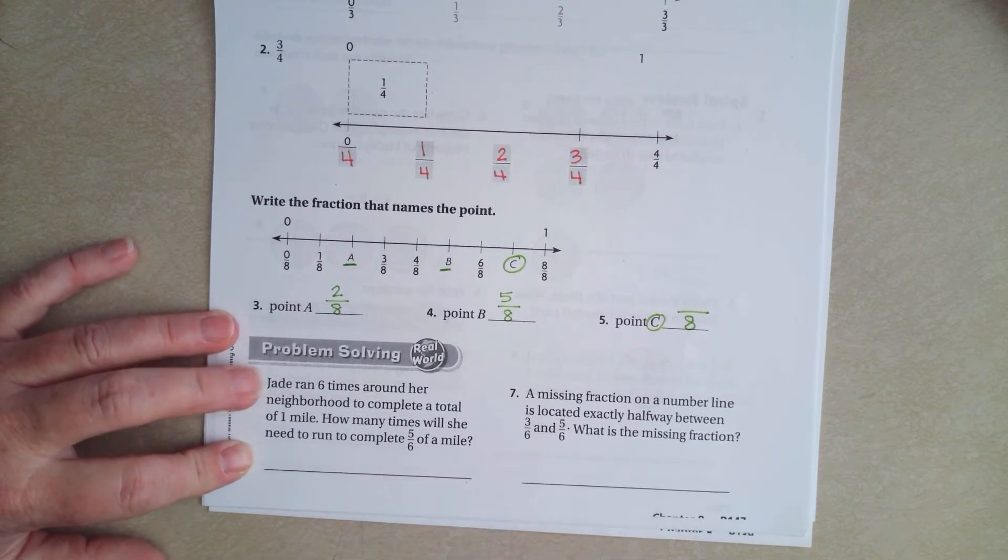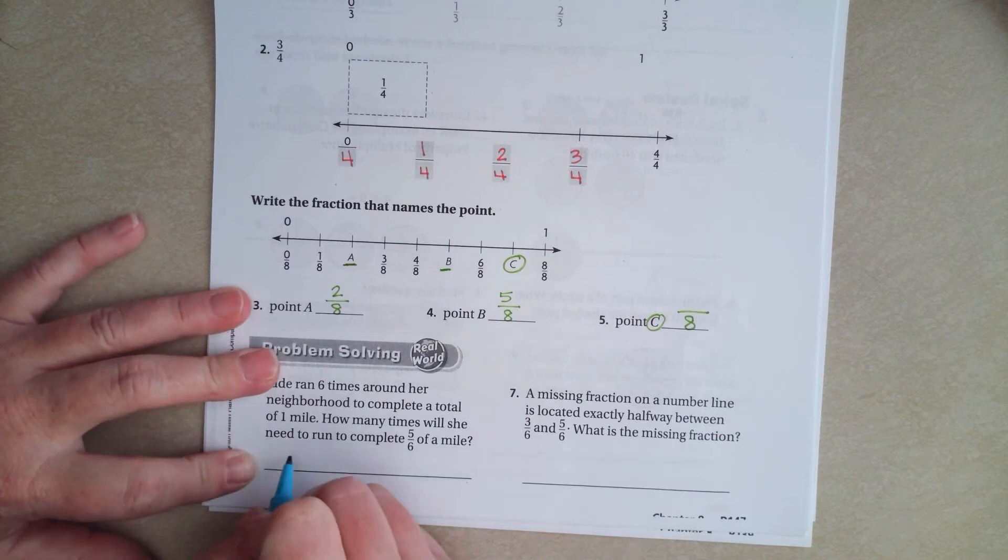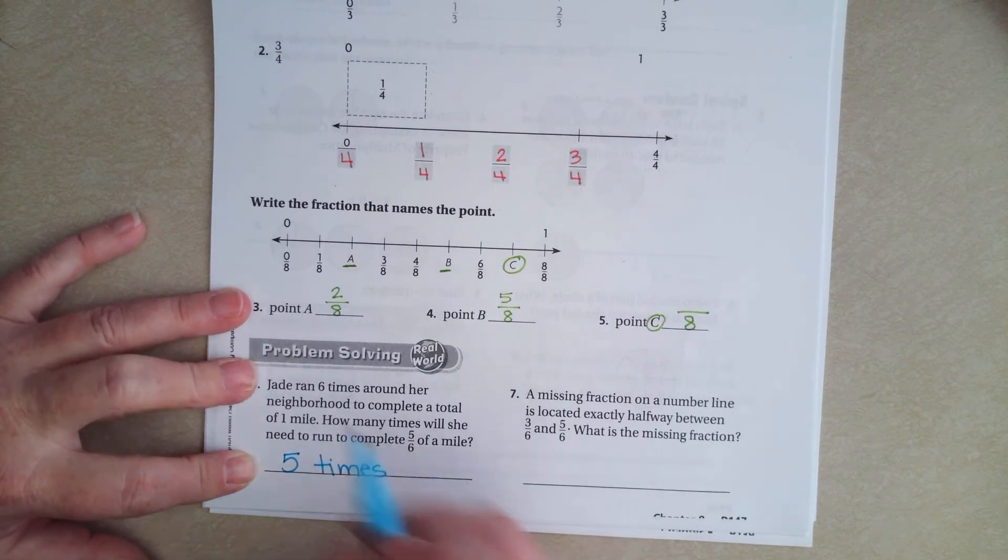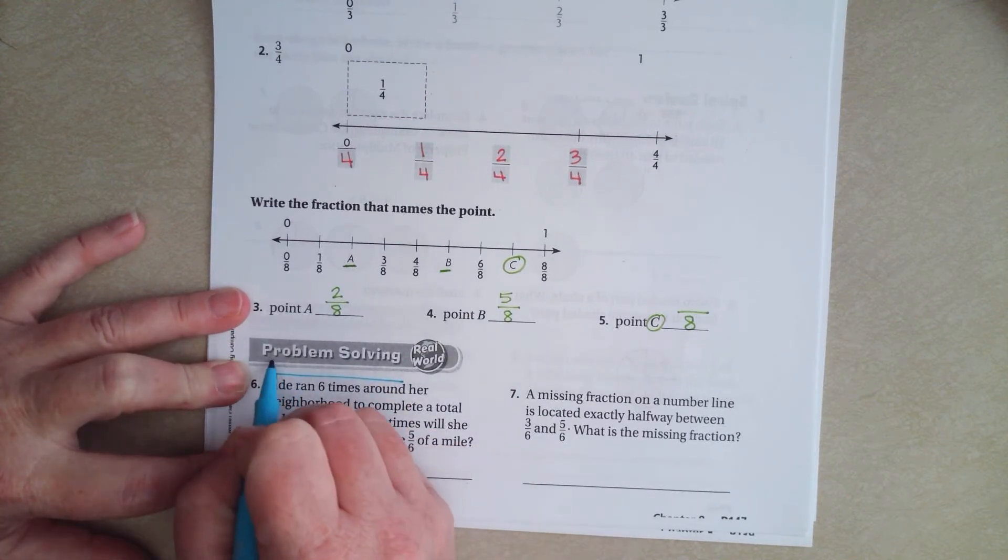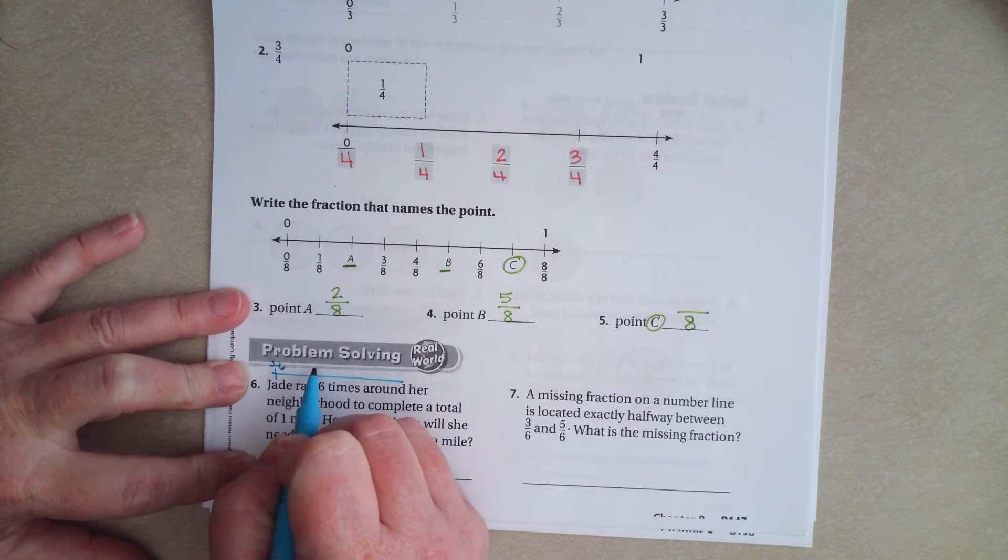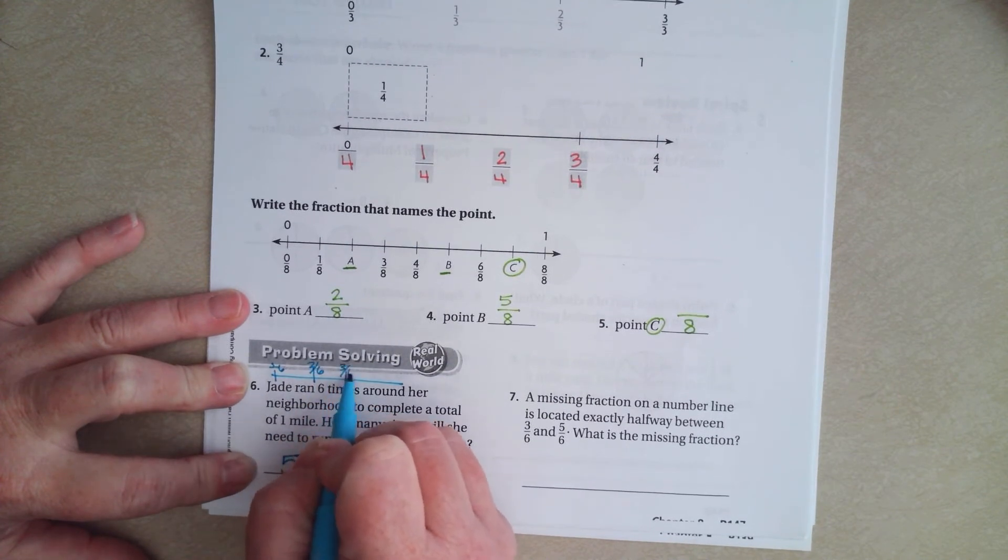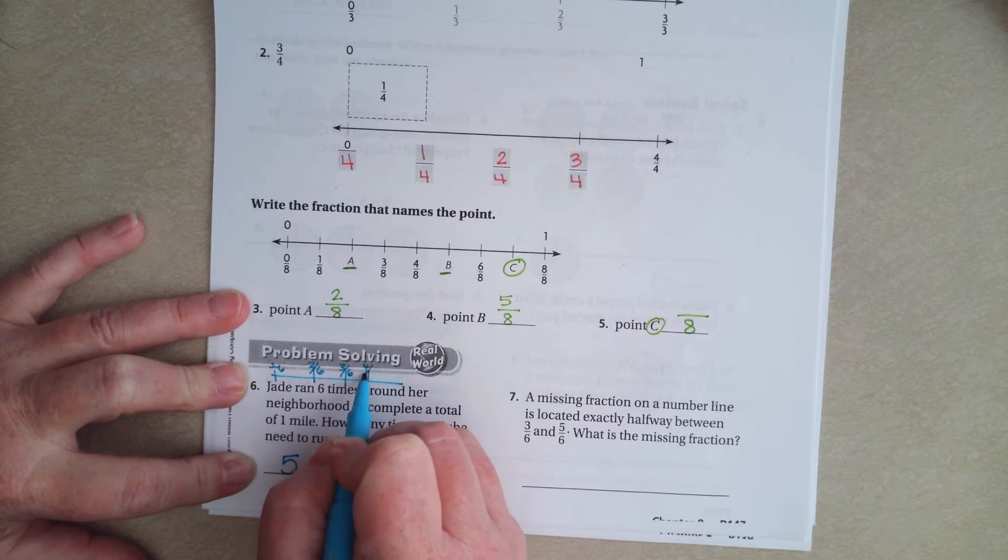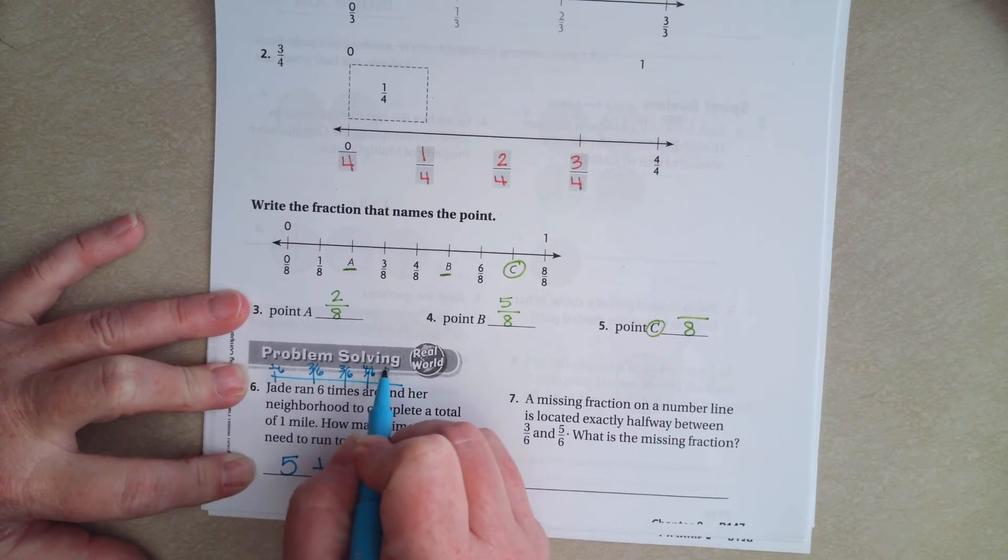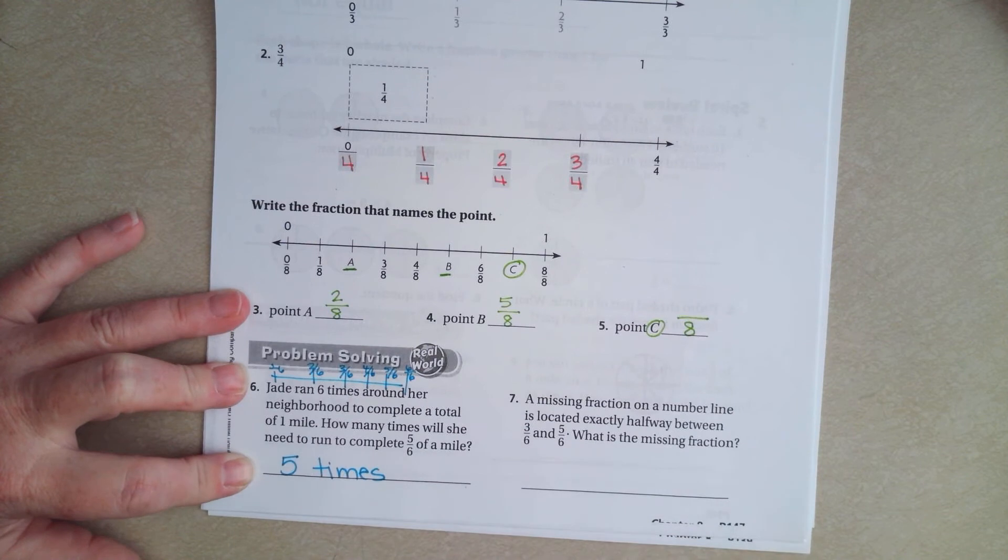So, how many times did she have to run to do 5 sixths of a mile? That's just 5 times. That would mean that she did 1 sixth, 2 sixth, 3 sixth, 4 sixth, 5 sixths, and 6 sixths.